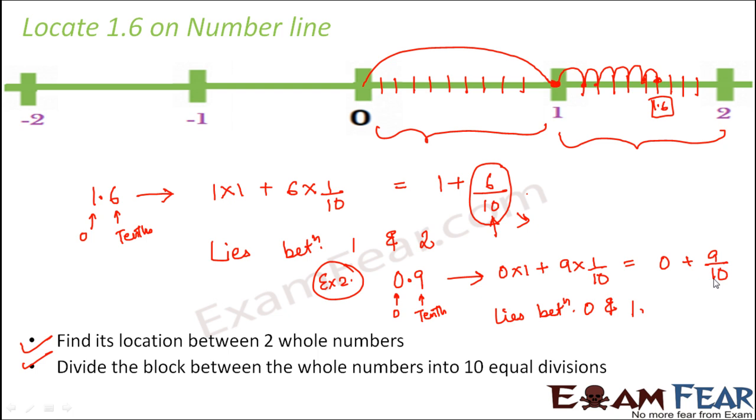Now how many parts we want out of 10 parts? Nine parts out of 10 parts. So you are already at 0 and now you need 1, 2, 3, 4, 5, 6, 7, 8, 9. Nine parts out of 10 parts. So this point would be 0.9.